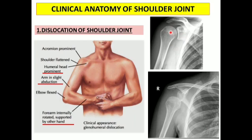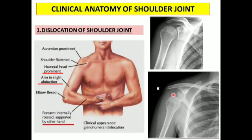I would like to show you this on a radiograph. In the normal X-ray, you can clearly see the head of the humerus, the greater and lesser tubercles, the surgical neck of the humerus, the glenoid cavity of the scapula, and the coracoacromial arch. Comparing this with the second radiograph, you can clearly see that the contact between the glenoid cavity and the head of the humerus is not in a normal alignment — there is displacement.